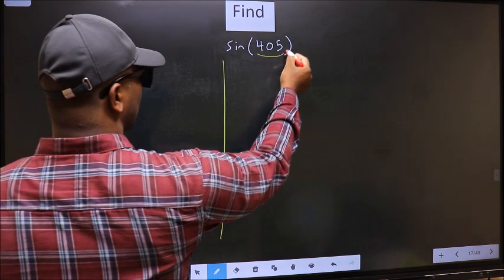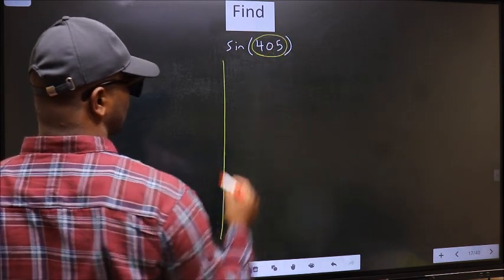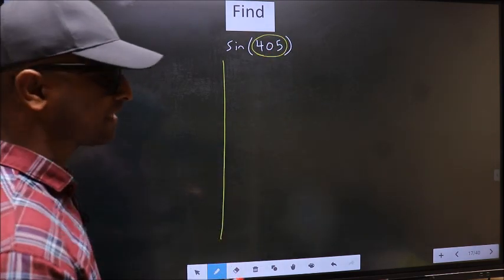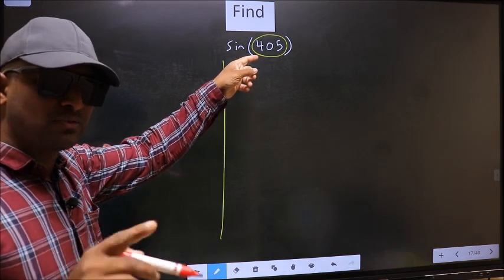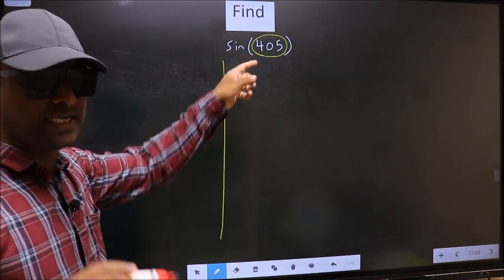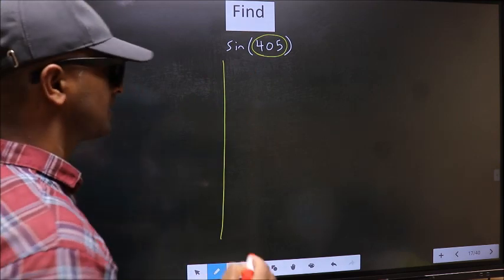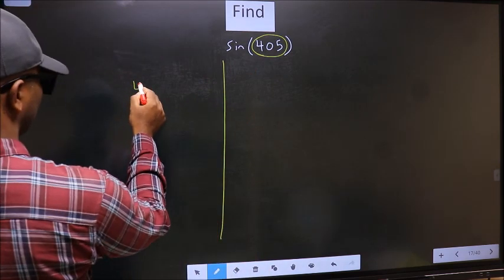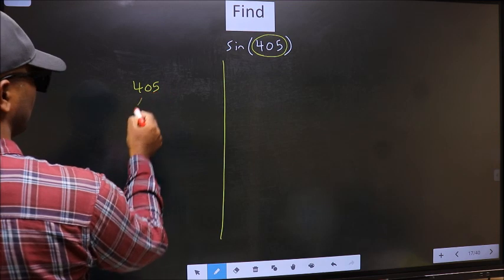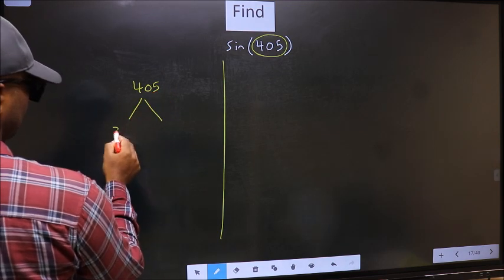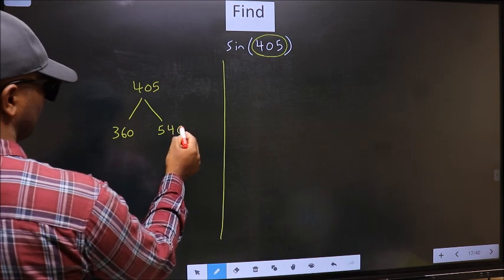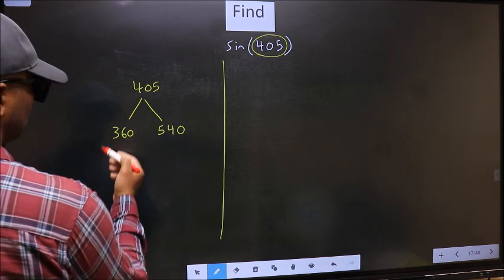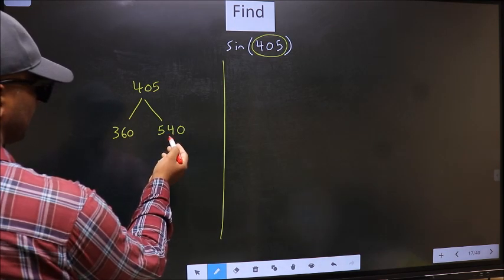Here we have 405. Now you should check: 405 lies between which two multiples of 180? What I mean is, 405 lies between 360 and 540. This is 180 times 2, and this is 180 times 3.